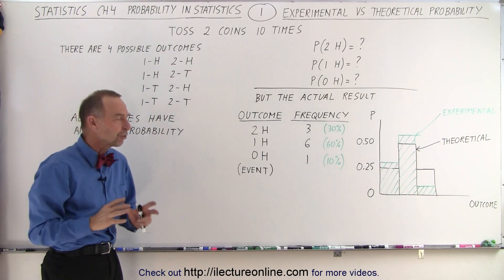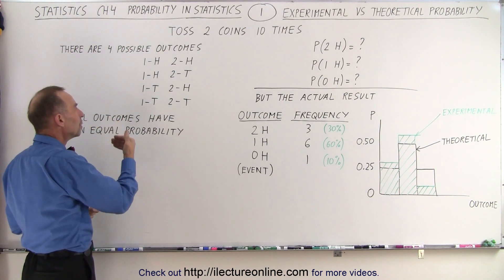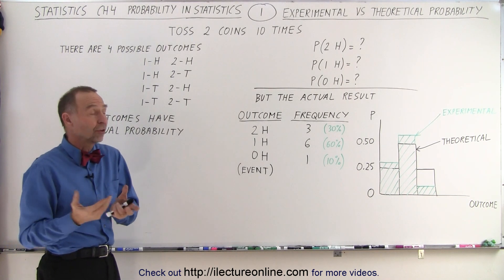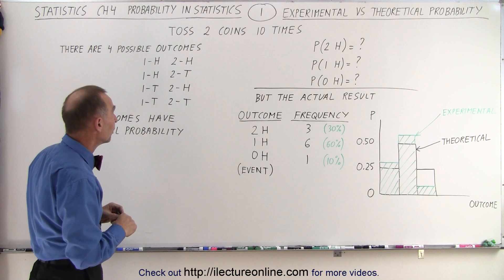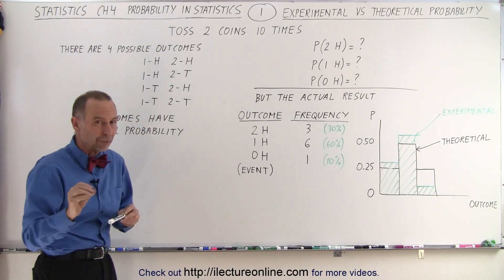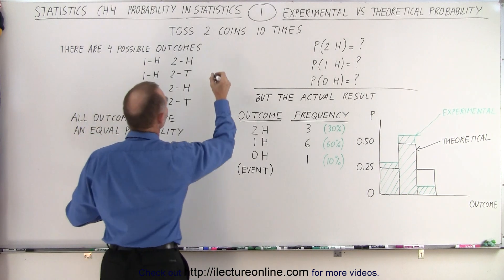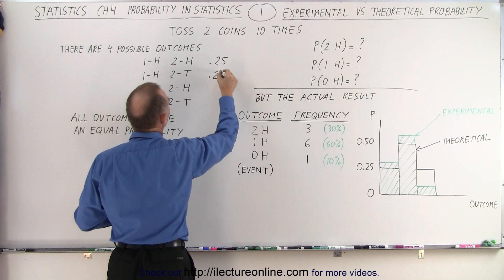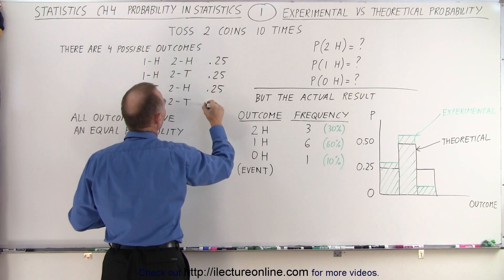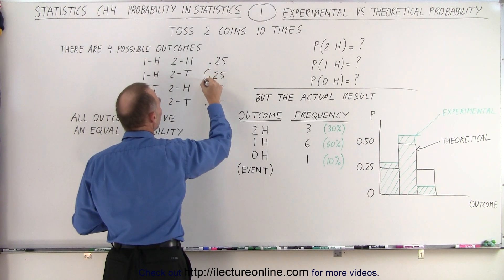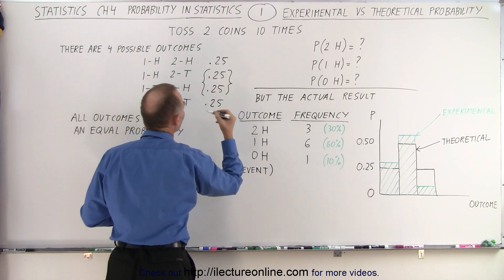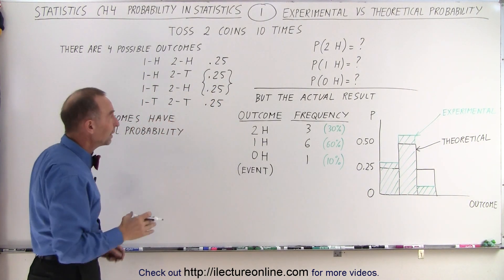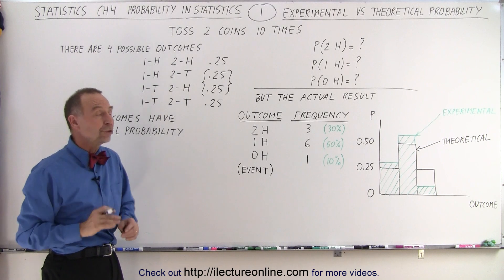So those are the four possible outcomes, and every outcome has an equal probability of occurring, at least theoretically. Will that actually be the case? Well, we'll see in just a moment. But since they have an equal probability of occurring from a theoretical point of view, we can say that the probability here is 0.25, the probability here is 0.25, the probability here is 0.25, and the probability there is 0.25. If we combine these two here, we can see that there's a 50% probability that one of them will be head and the other one will be a tail if we don't care what the order of them was.